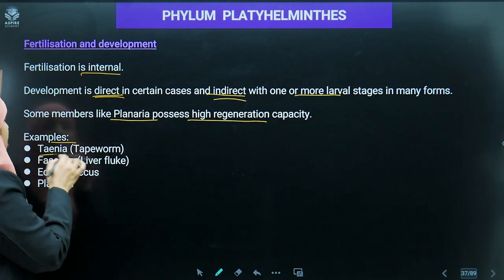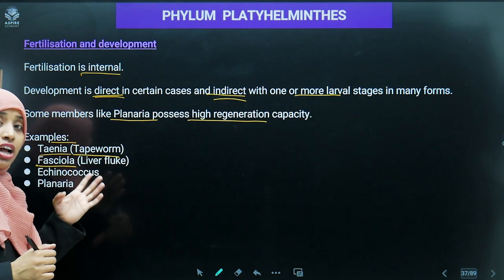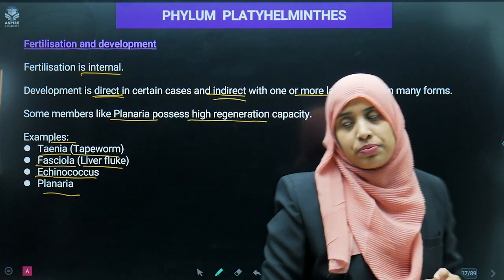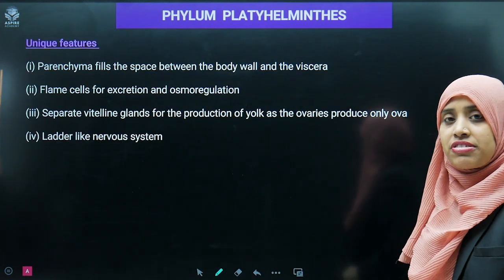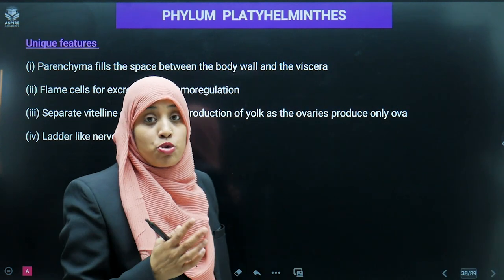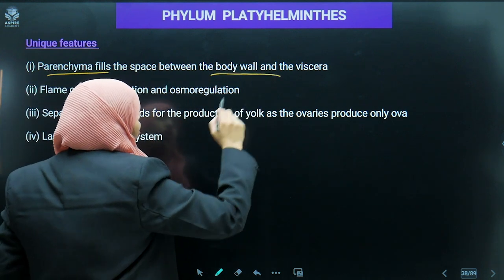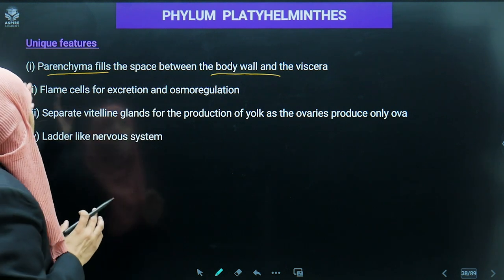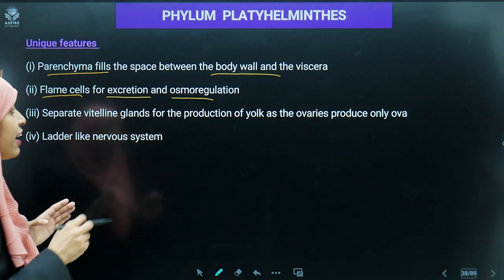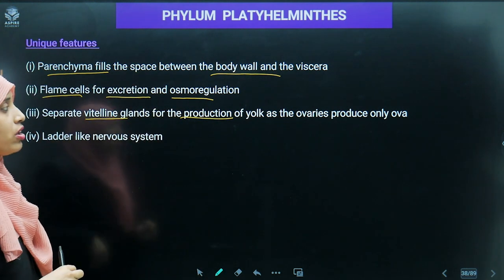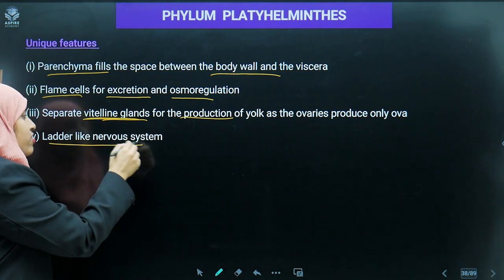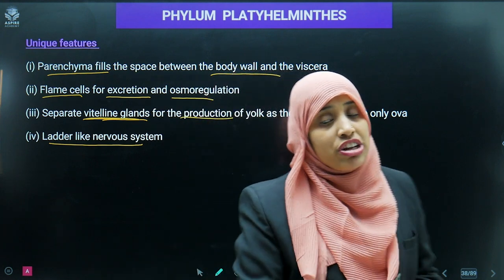Examples of platyhelminthes: Taenia solium (tapeworm), Fasciola hepatica (liver fluke), Echinococcus, and Planaria. Unique features include: parenchyma filling the space between the body wall and visceral region, flame cells for excretion and osmoregulation, separate vitelline glands for production of yolk (as the ovary only produces ova), and a ladder-like nervous system.